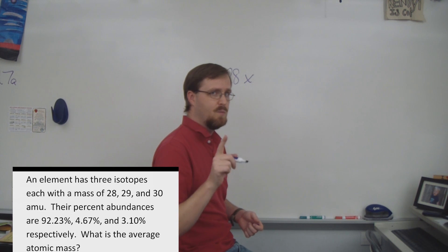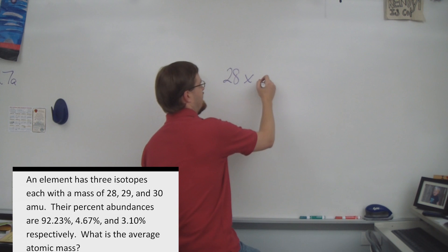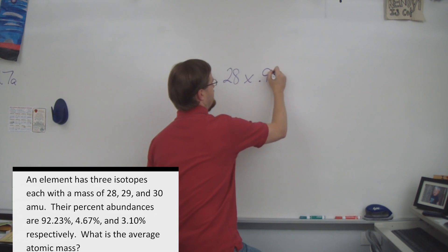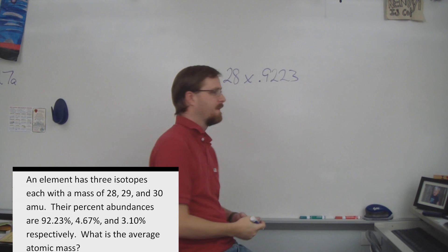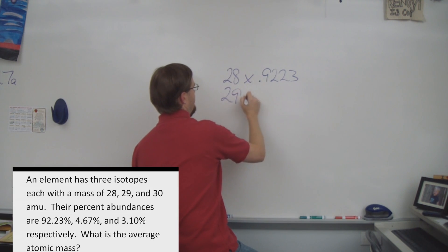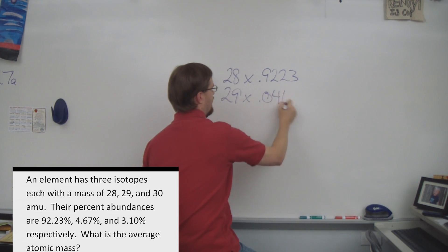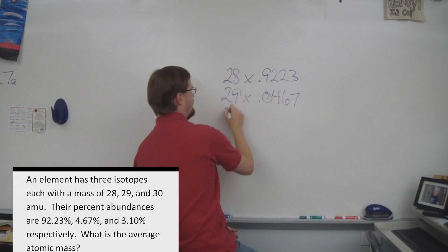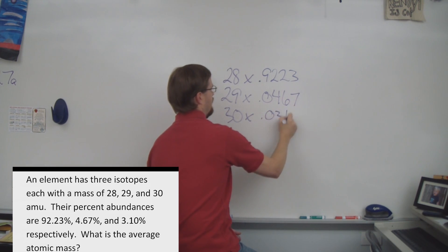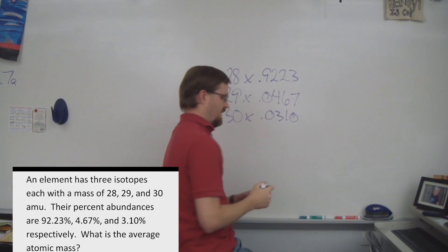But remember, we can't use numbers in their percentage format. We've got to move that decimal to the left two places, so we get .9223. For the second one, it's 29 times .0467. And for the last one, it is 30 times .0310.